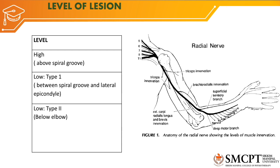The clinical features of radial nerve injury differ according to the level of injury. The levels are divided into high — above the spiral groove — low type 1 — between the spiral groove and lateral epicondyle — and low type 2 — below the elbow. If it is high, the injury could be anywhere above the spiral groove, including the brachial plexus region or the surgical neck region.